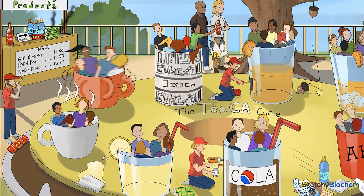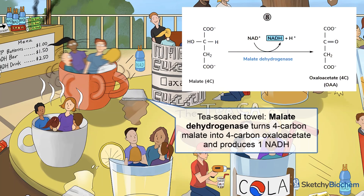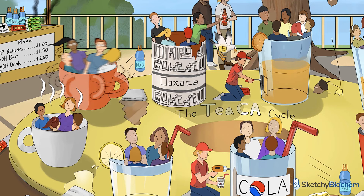Hold on to your pants, guys — we're almost done. We finally encountered our last towel and dehydrogenase. You'll also see a puddle of tea next to the malfunctioning malate cup. In the last step, malate dehydrogenase oxidizes 4-carbon malate into 4-carbon oxaloacetate. We've reached the Oaxacan hot chocolate cup once again — Viva Oaxaca! We produce 1 NADH during this step, represented by the flying NADH drink. Malate dehydrogenase is part of the malate aspartate shuttle, used to transport electrons produced during glycolysis across the mitochondrial membrane for the electron transport chain. Finally, oxaloacetate combines with acetyl-CoA just like in step 1, and the cycle repeats.